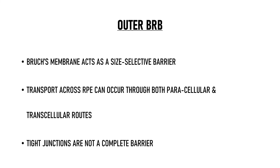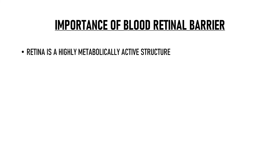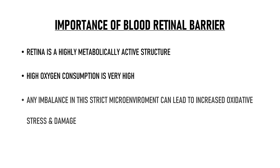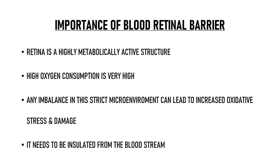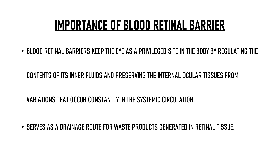Why is the blood retinal barrier needed at all? The retina is a highly metabolically active structure. Its oxygen consumption is very high, and any imbalance in this strict microenvironment can lead to increased oxidative stress and oxidative damage to the retinal neurons. That is why it needs to be insulated from the bloodstream, and that work is done by the blood retinal barrier. The blood retinal barrier keeps the eye as a privileged site in the body by regulating the contents of its inner fluids and preserving the internal ocular tissues from variations that occur constantly in the systemic circulation. It also serves as a drainage route for waste products generated in the retinal tissue.